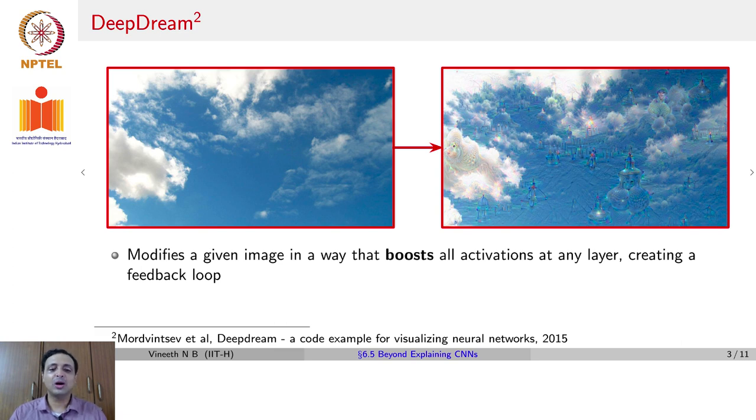The first one is a work known as DeepDream, which was developed in 2015, which uses the ideas that we talked about in the earlier lectures of the week, but in a different and interesting way. It modifies a given image in a way in which that boosts all activations at any layer, creating a feedback loop.